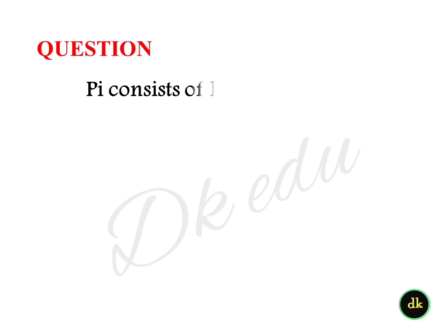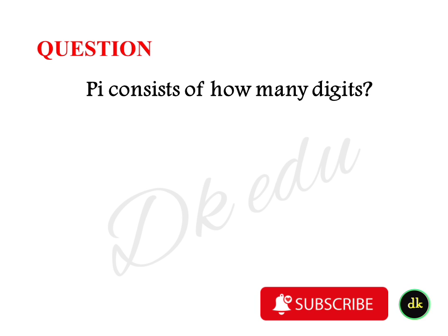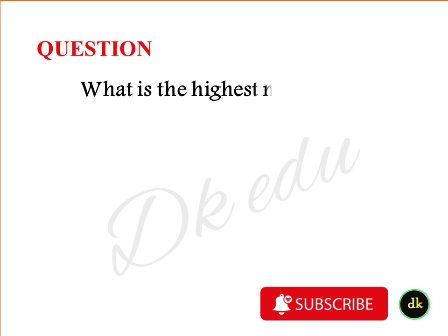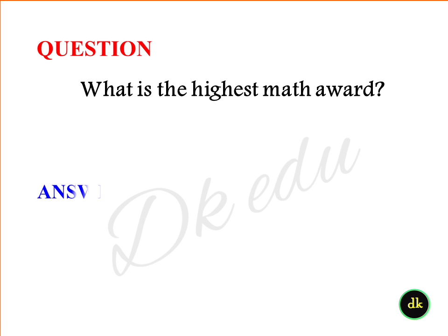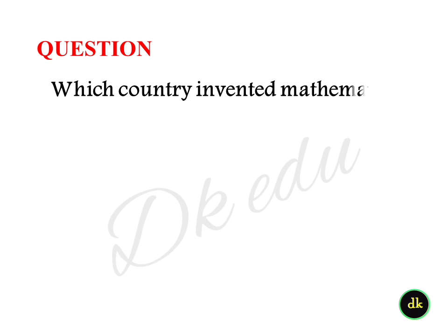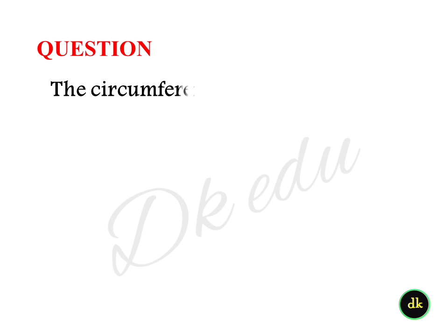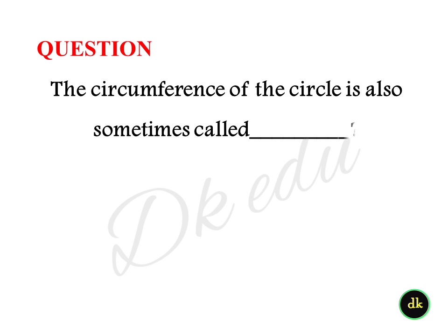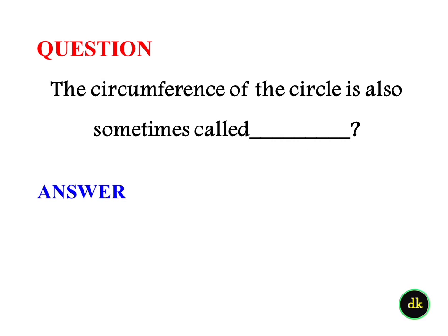Pi consists of how many digits? Answer: Infinite. What is the highest math award? Answer: The Fields Medal. Which country invented mathematics? Answer: Greece. The circumference of a circle is also called? Answer: Perimeter.